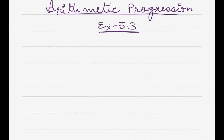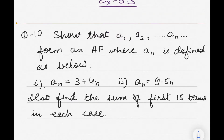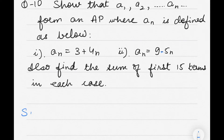We are continuing with the chapter on arithmetic progression, Exercise 5.3. We have finished the first nine questions in the previous videos. Now let's start with question number 10, which says: show that a1, a2, and so on up to an forms an AP, where an is defined in two ways.